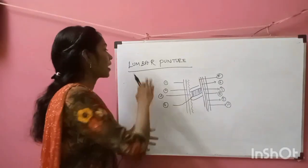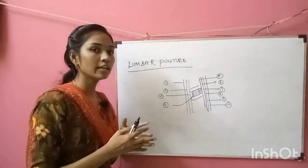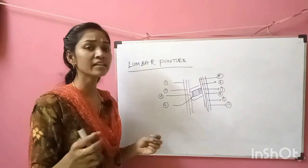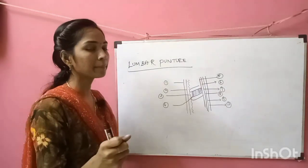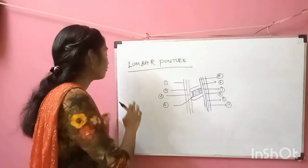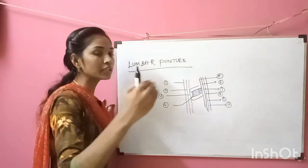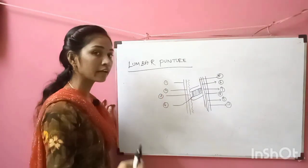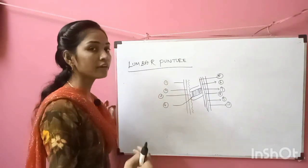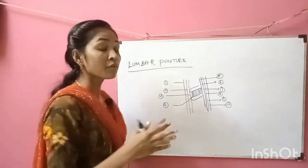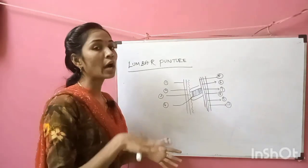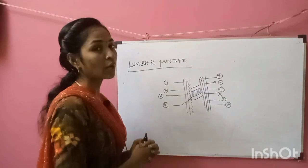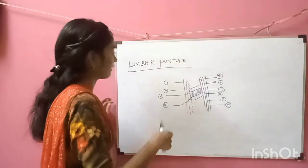Now we are going to discuss lumbar puncture — what are the layers we have to pass through. We perform lumbar puncture at the level of L3-L4 or L4-L5. There are 10 layers we must pass through.